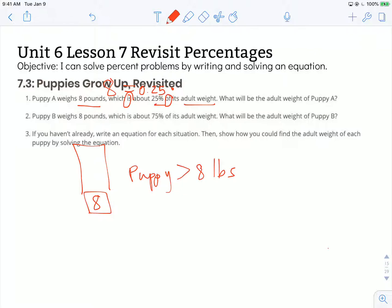25 hundredths of its adult weight. So I can use W to represent its adult weight. So I've got 8 is equal to 25 hundredths of the adult weight of that puppy.